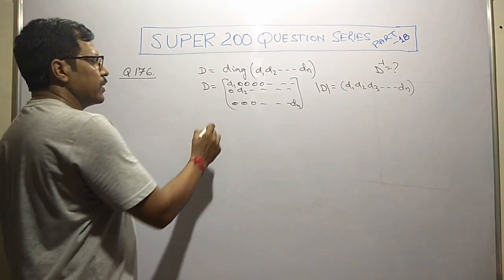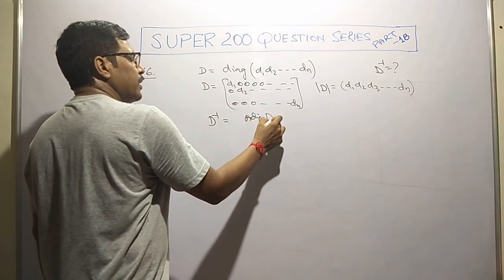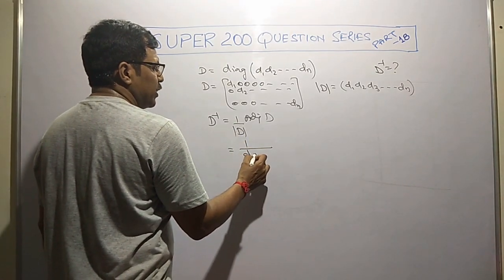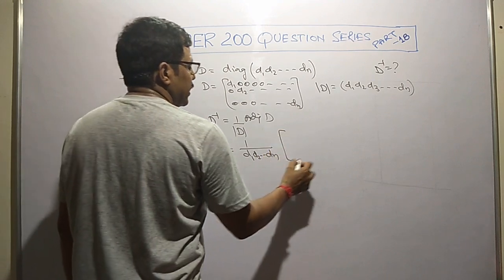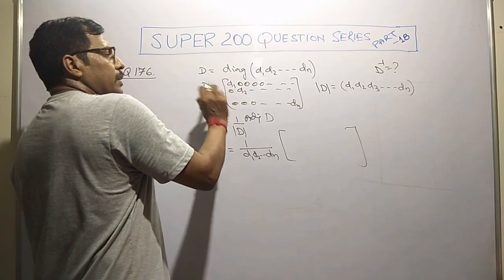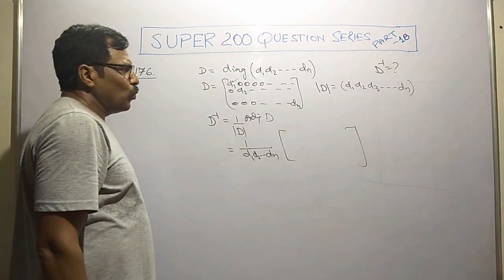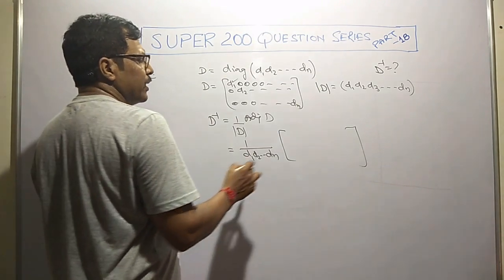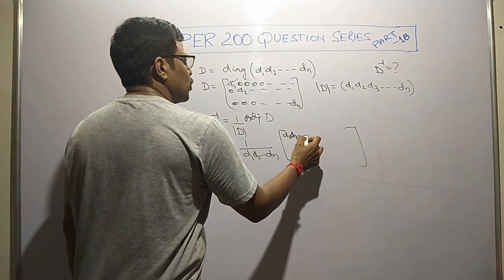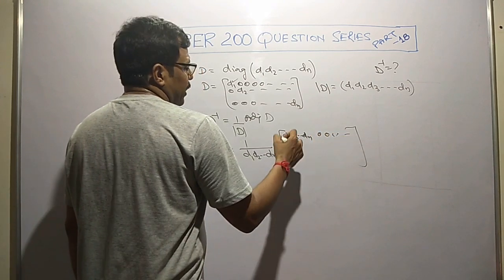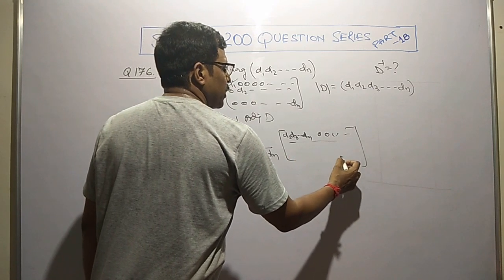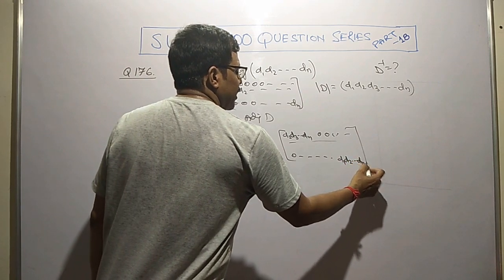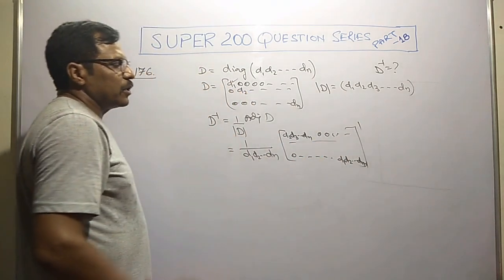In case of a diagonal matrix, determinant is the product of all diagonal elements: d1 into d2 into d3 up to dn. d inverse equals adjoint of d divided by determinant of d. For adjoint, cofactor of first element a11 would be product of rest diagonal elements d2 d3 up to dn, rest all zeros. After putting all cofactors and taking transpose, we get the adjoint.